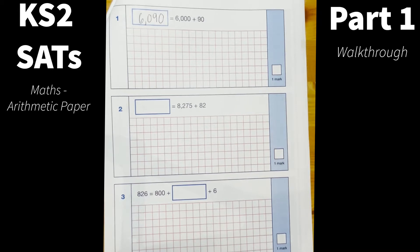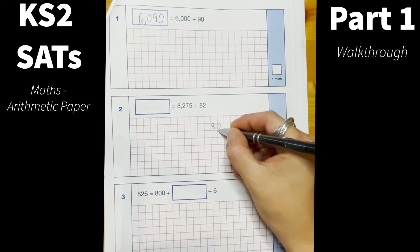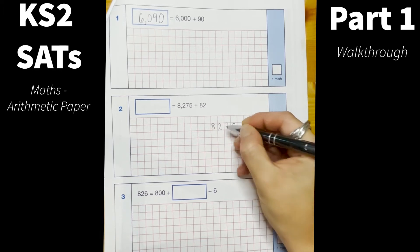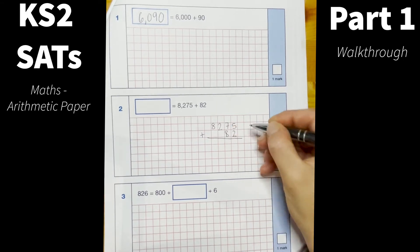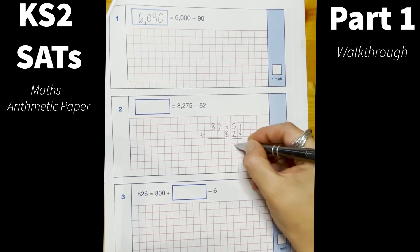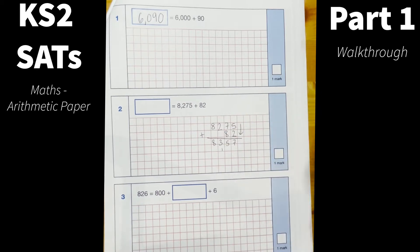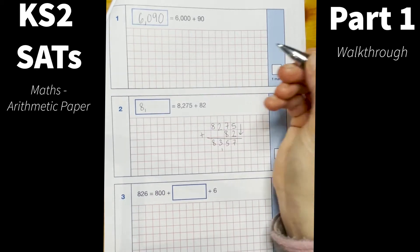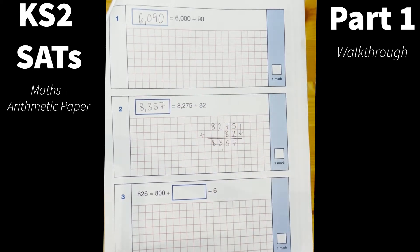Okay number two, again addition we'd want to use the column method for this. So 8275 add 82 and we add downwards and then we pop our answer again in the answer box and just remember to put a comma there to show that we're working with the thousands.